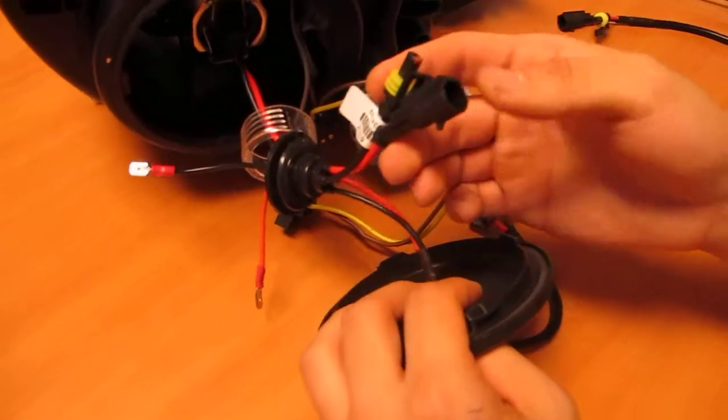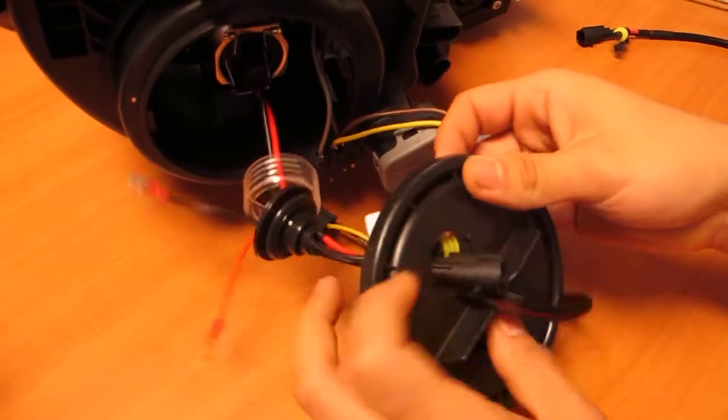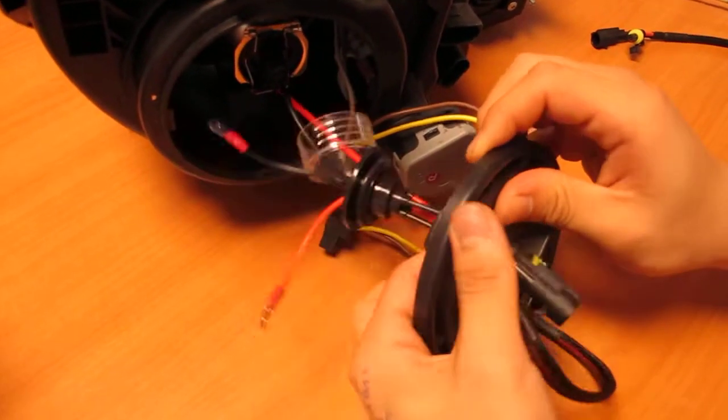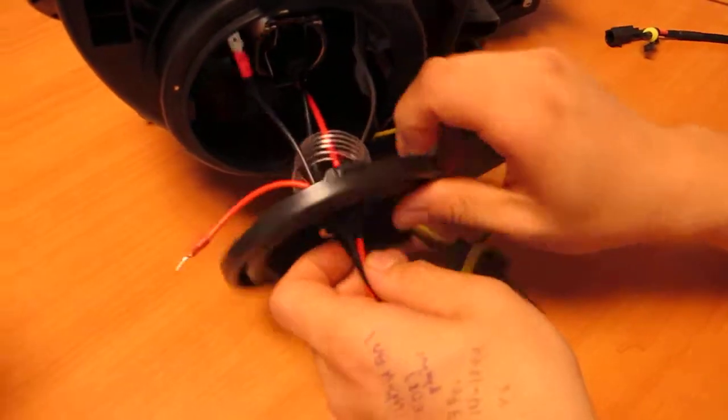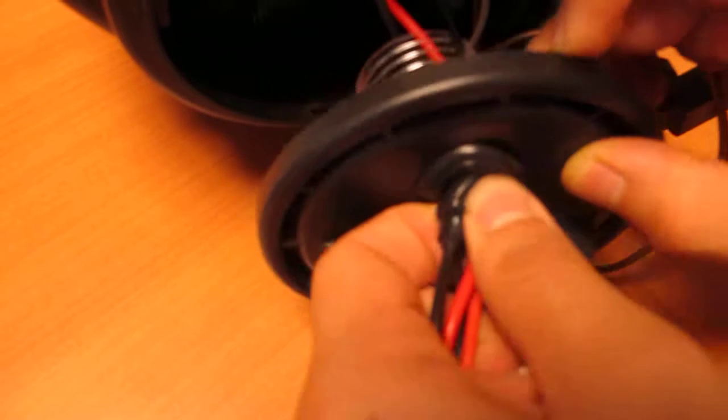You'll also want to get these male and female plugs through as well as they are connectors to your HID ballast. So once you have that through, you'll be meeting the cap with the grommet. The grommet has two layers. You'll be slipping the middle layer so that its position is tight and snug just like this.